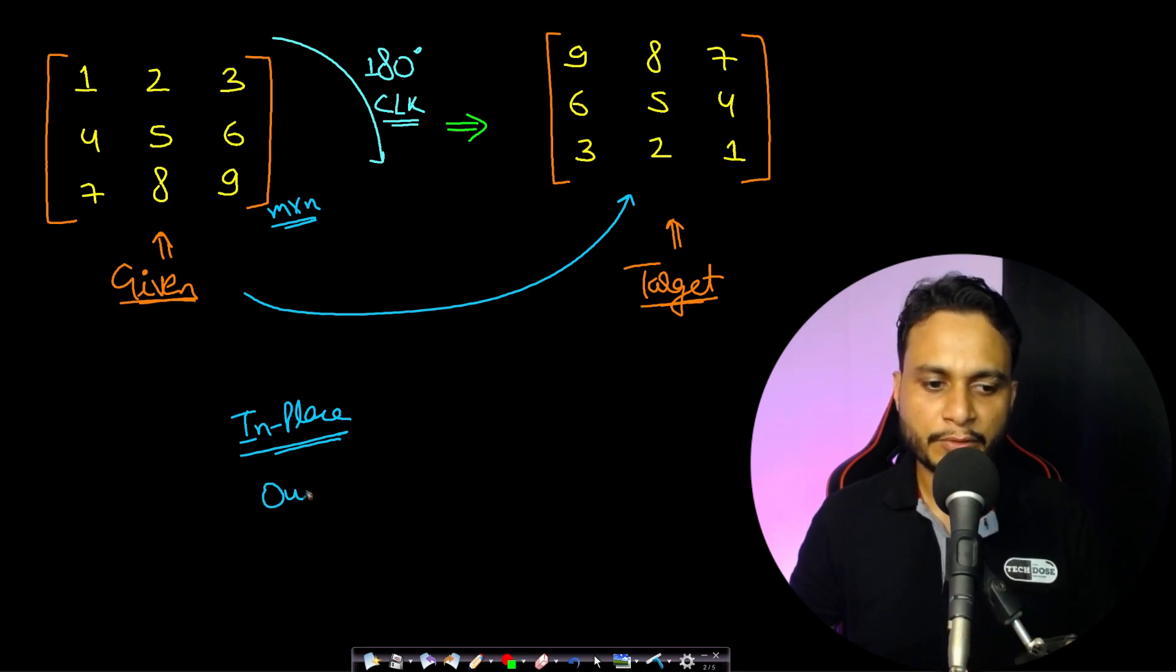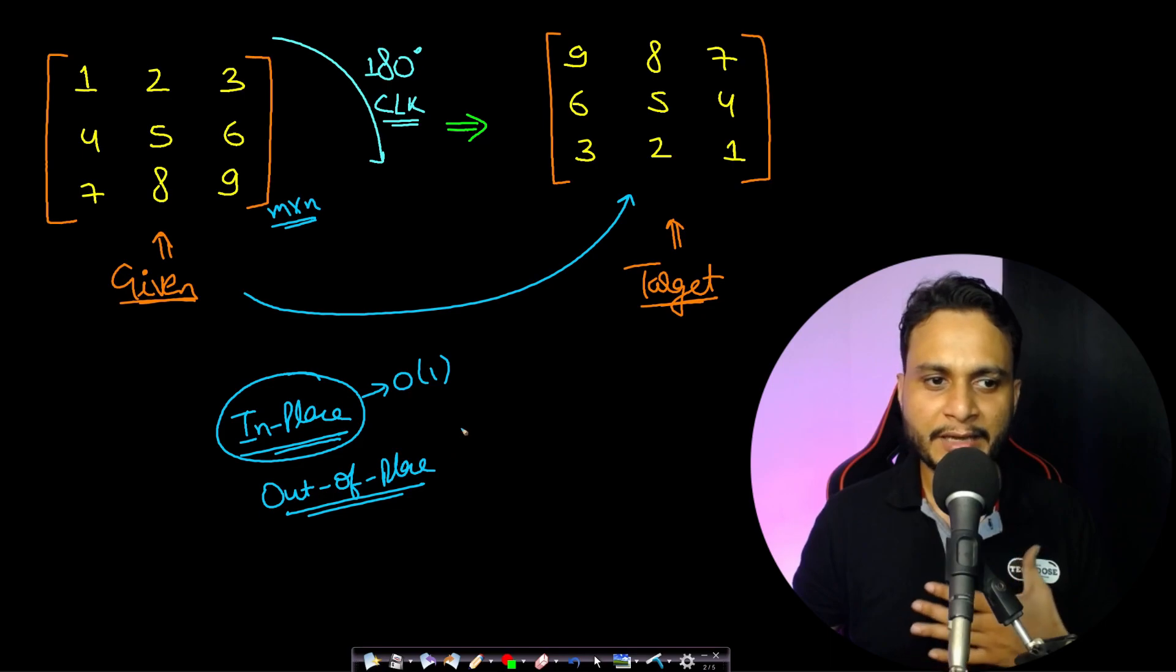If you talk about out-of-place algorithms, then they require extra space even though the time complexity is the same. In-place algorithms do not have any space complexity, they have order of 1 space complexity. Hence they must be preferred over any of the out-of-place algorithms.